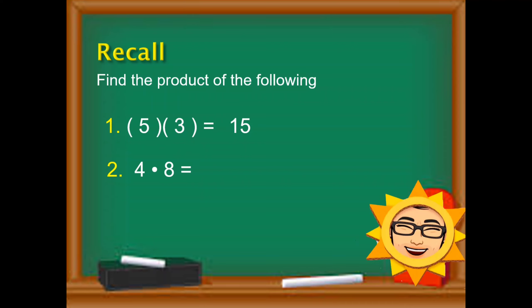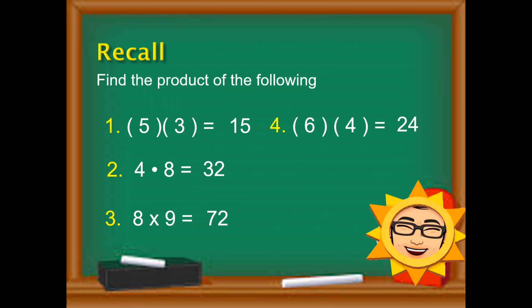4 times 8 is 32. Then 8 times 9 is 72. Then 6 times 4 is 24. And the fifth one is 3 times 7, which is 21. So before going on with the rule that we are going to apply, let us recall first the symbols that we use.